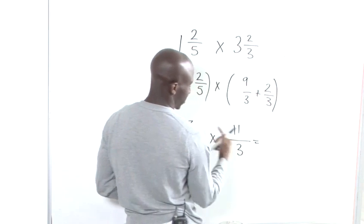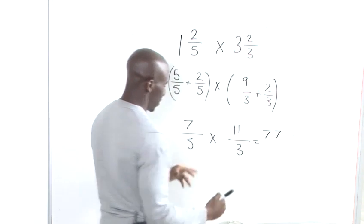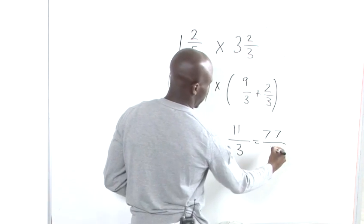So we've got 7 times 11, which is 77. And we've got 5 times 3, which is 15.